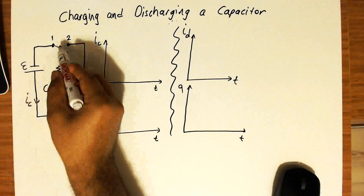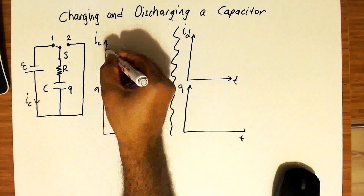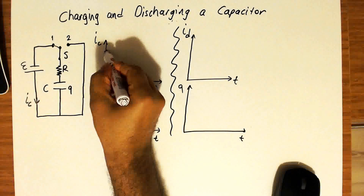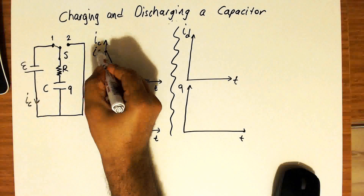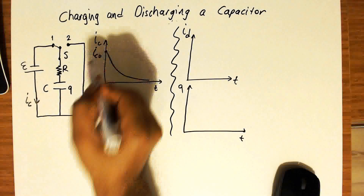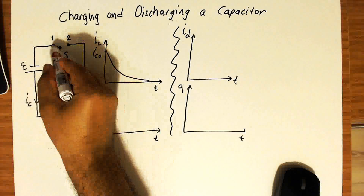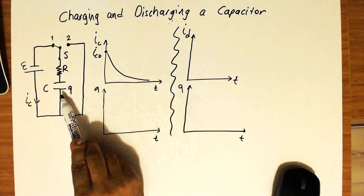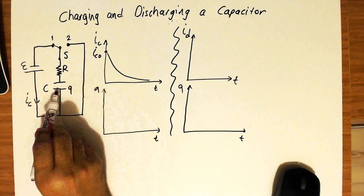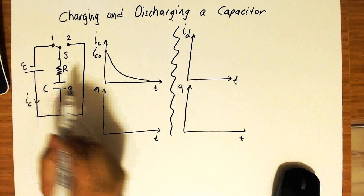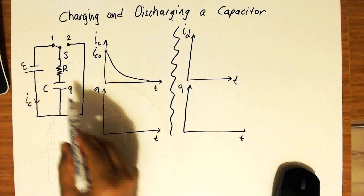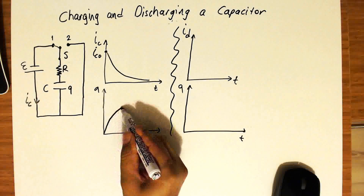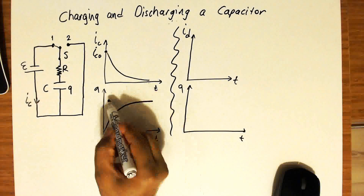Right after you close the switch, the current will start from a maximum value and it will drop exponentially. So this maximum value is IC0, when time t is equal to zero, when you close the switch to position one. For the charge on the capacitor, since we start from zero net charge, at time t equal to zero the charge is zero, and it will increase. This increase will go exponentially, asymptotically approaching a maximum value.